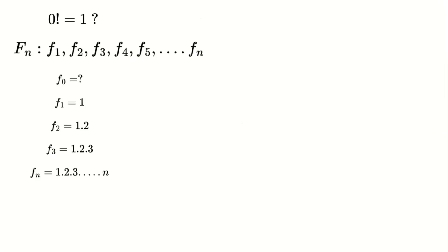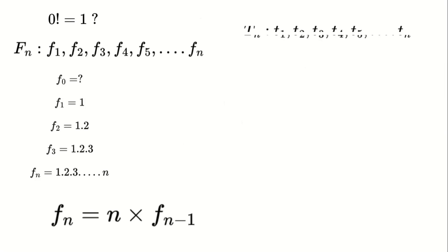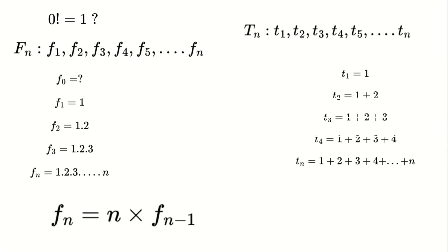Each term in the sequence can be expressed as the current number multiplied by the previous term, giving us a general formula: the nth term equals n times the previous term. This sequence is analogous to triangular numbers, which instead of products involve sums. For triangular numbers, the next term is found by adding n to the previous term. Both these sequences traditionally use natural numbers as their input.